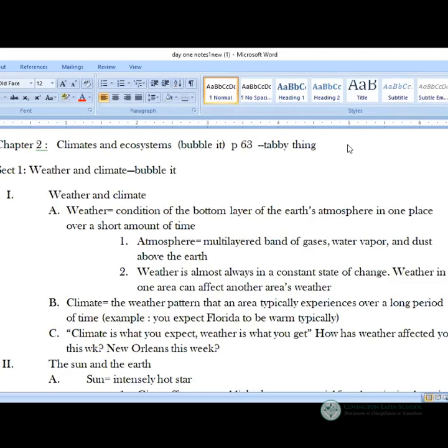The atmosphere is a multi-layered band of gases, water vapor, and dust above the earth. And weather is almost always in a constant state of change. How many have noticed that about Northern Kentucky weather? We are changing all the time. For sure. It's always changing. And you notice that weather in one area can affect weather in another area. So last week, there were all of the double hurricane or two weeks ago, there was the double hurricane down near New Orleans. Did anybody notice that we got a lot of rain when that came through? For sure. That all affects it.